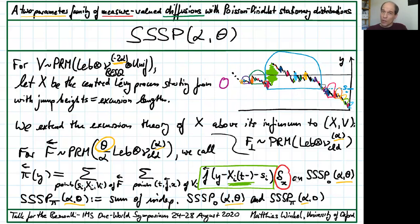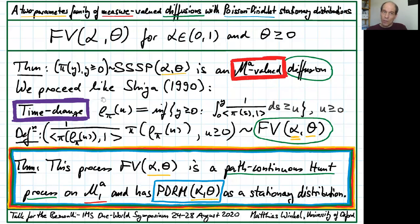This ends our construction and we can now pull all the threads together. Like Shiga we have measure-valued diffusion with a branching property, Crump or Jäger's type branching property and that's the SSSP alpha theta. We then use Shiga's time change based on the total mass and we renormalize to unit total mass. What we find is a probability measure-valued diffusion that we call Fleming-Viot process with parameters alpha and theta.